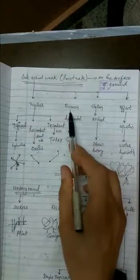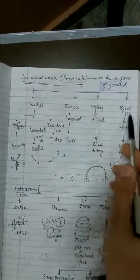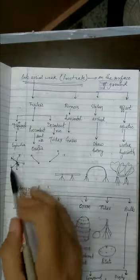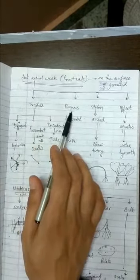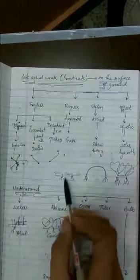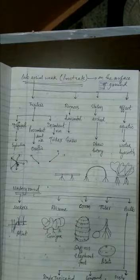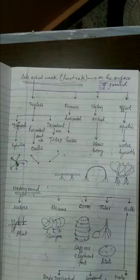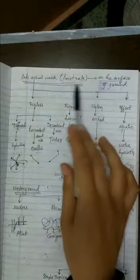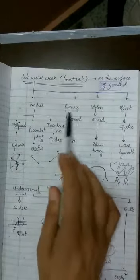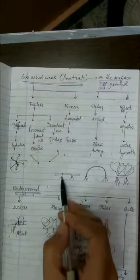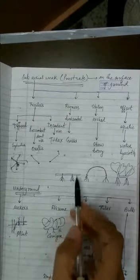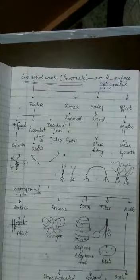Runners, stolons, and offsets differ from trailers in that they produce roots wherever they touch the soil. Grasses are the best example of runners. When you uproot a grass, a long, thread-like horizontal structure comes out — that is the runner. Runners have nodes from which roots grow downward and leaves grow upward.